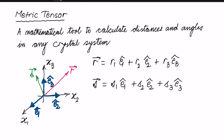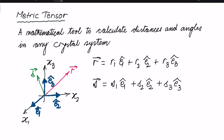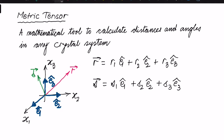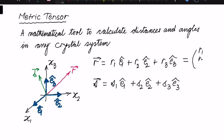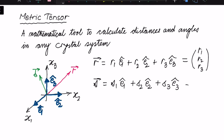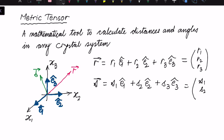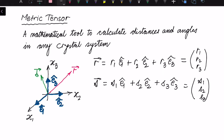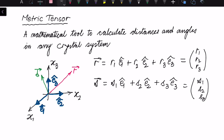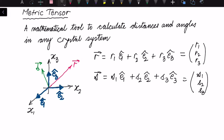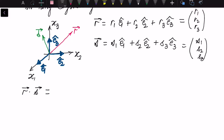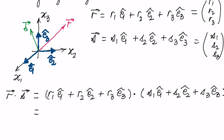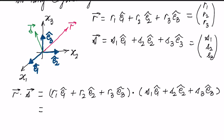So r1, r2, r3 are the components of r and s1, s2, s3 are the components of s. Sometimes we write only the components r1, r2, r3 and s1, s2, s3 to represent these vectors. Now, how do we find the dot product of these two vectors? Let us write the expression for the dot product of r and s. If we expand the parentheses, we get nine terms.